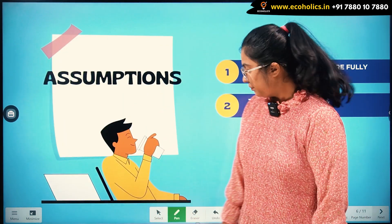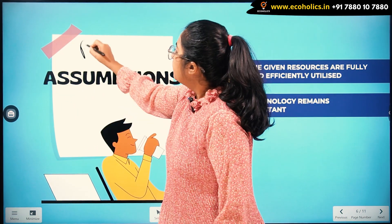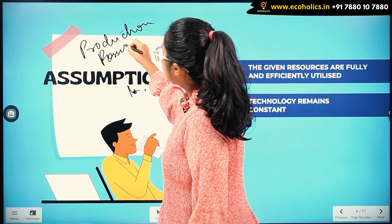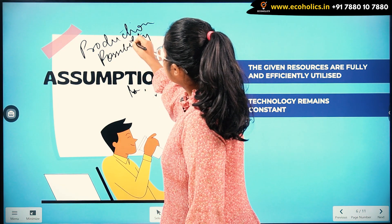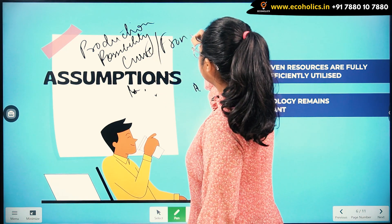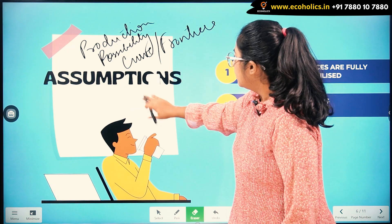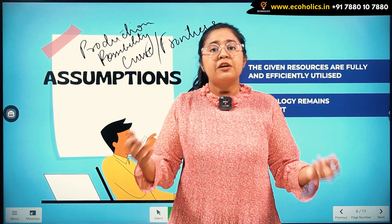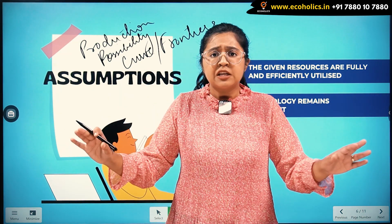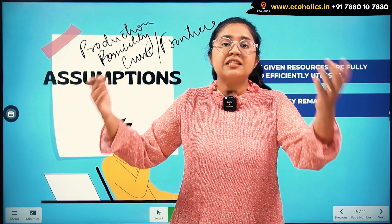PPC stands for Production Possibility Curve, also called Production Possibility Frontier. It is also called the transformation curve. The reason it is known as a transformation curve is because it talks about the transformation happening in the economy, due to which production changes.